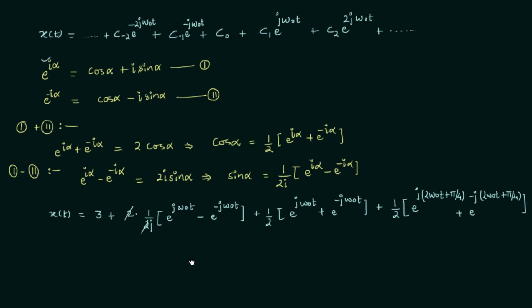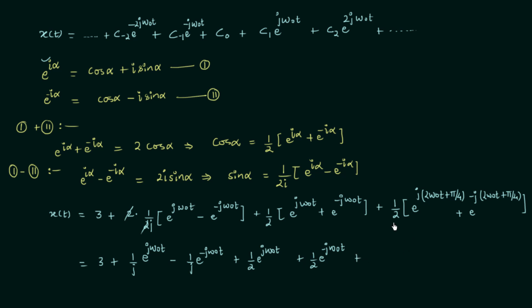After simplification, the 2 and 2 cancel, giving us 3 plus 1 by j e raised to power j omega0t minus 1 by j e raised to power minus j omega0t, plus 1 by 2 e raised to power j omega0t plus 1 by 2 e raised to power minus j omega0t. For the last term we split e raised to power j times 2 omega0t plus pi by 4 into e raised to power 2j omega0t multiplied by e raised to power j pi by 4, using the property e raised to power a plus b equals e raised to power a times e raised to power b.